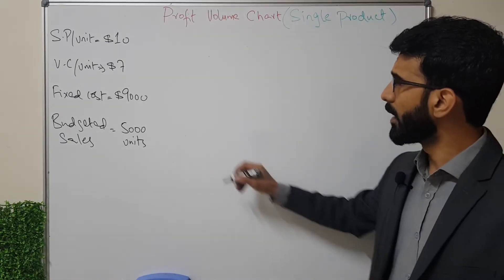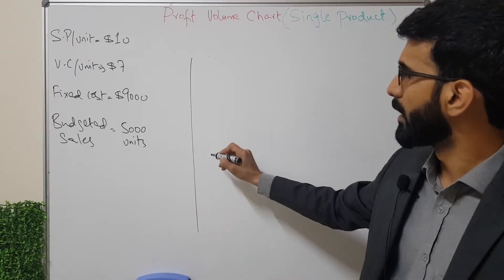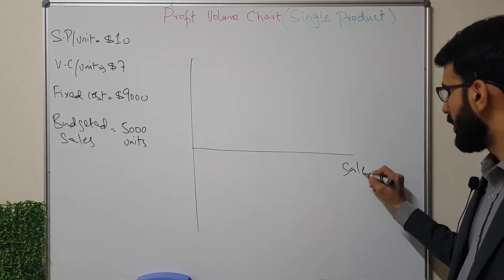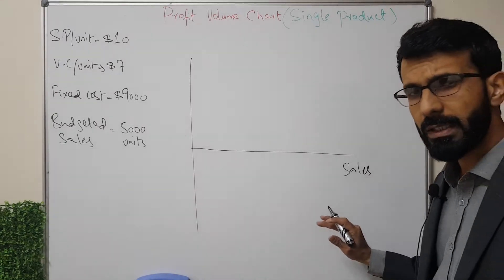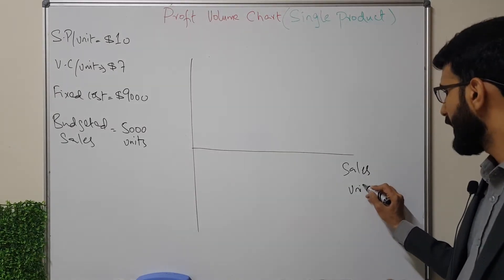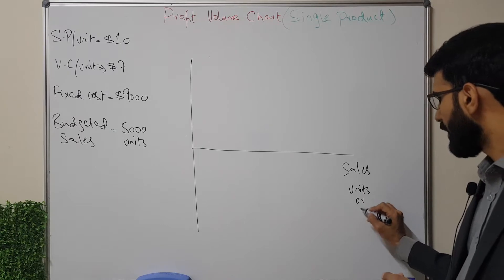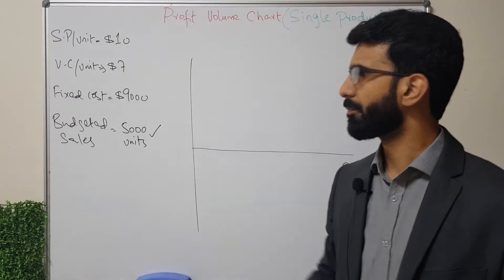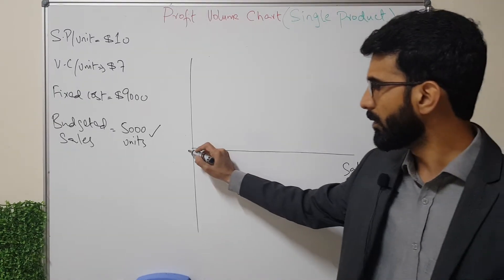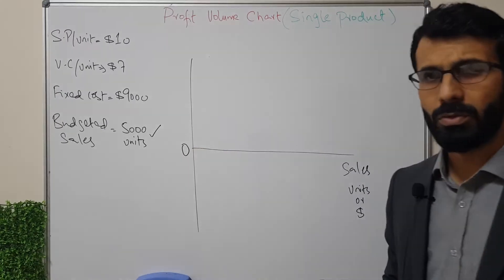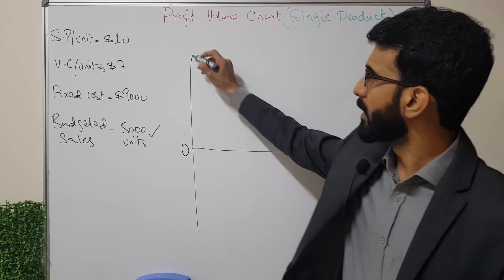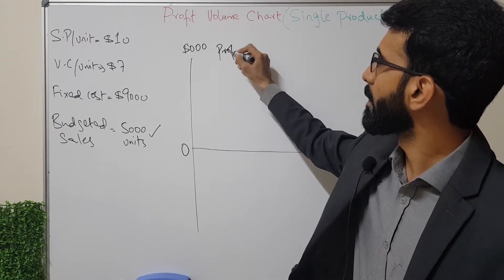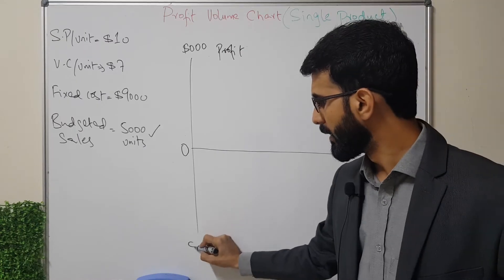In this chart, volume of sales is on one axis. We can express sales in terms of units or in terms of amount, but we will be using units initially. On the other axis we have the amount of profitability, and below zero we are in a loss position.